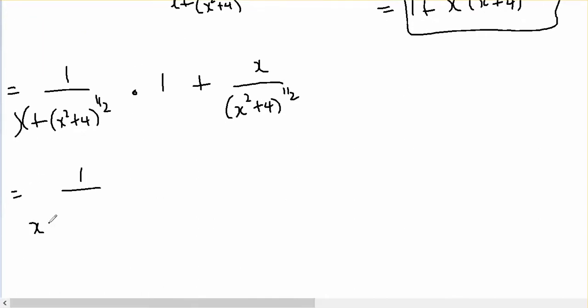Which equals 1 on top of x plus x squared plus 4 to the half times, well if I have a lowest common denominator of x squared plus 4 to the half, then this has got to be...